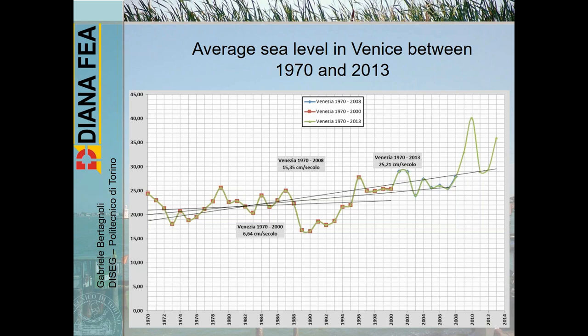In this diagram you see the variation of the average sea level in Venice between 1970 and 2013. On the horizontal axis you see the time in years, and on the vertical axis the height of the sea measured in centimeters. The average level of the sea is slowly increasing in time. The green curve is irregular, going up and down, but drawing straight lines we can see that the average increase in sea level is about 25 centimeters per century, which is quite a big number.